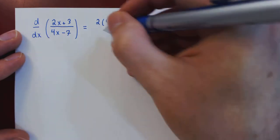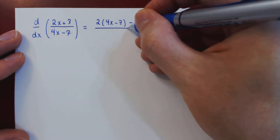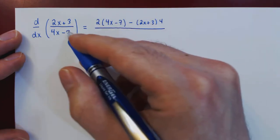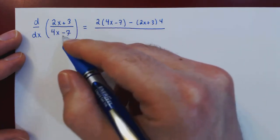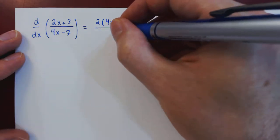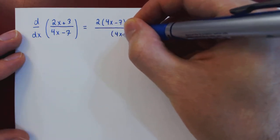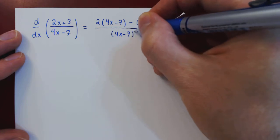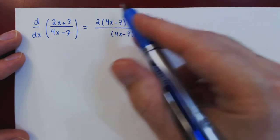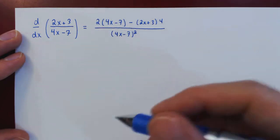And of course all of this must be divided by the entire original denominator squared, so 4x minus 7 squared. So we now have the derivative. Let's see if we can simplify a little bit.